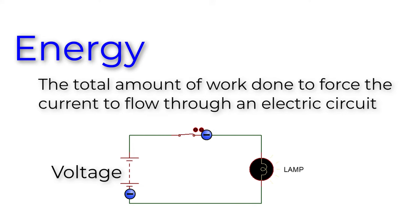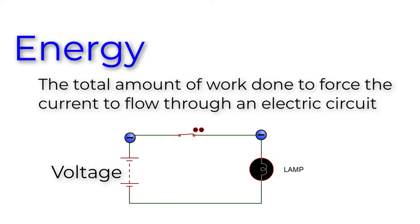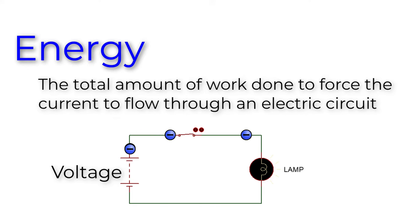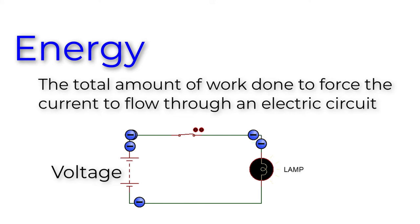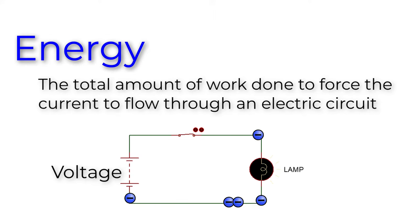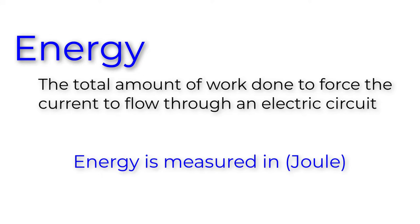Electric energy is transferred from the power source to the lamp and will be converted into light energy. As we increase the voltage, the amount of work will increase, which will cause more electrons to flow, and this will increase the amount of transferred energy. Electrical energy is measured in joule.